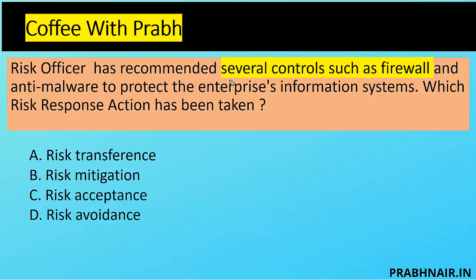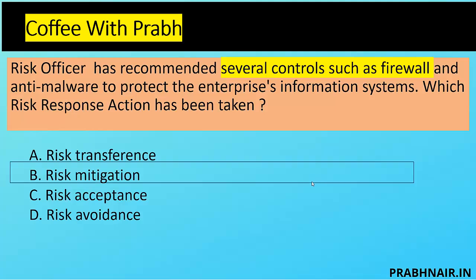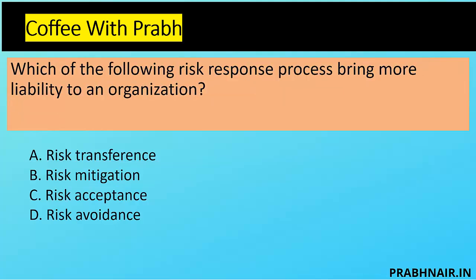Next coffee shot: a risk officer has recommended several controls such as firewalls and anti-malware to protect the enterprise information system. Which risk response action has been taken? It is not transfer — not transitioning to a third party. It is mitigation — because we are implementing controls. It is not acceptance — they have already taken control action. It is not discontinuing anything. The closest option is B — risk mitigation.